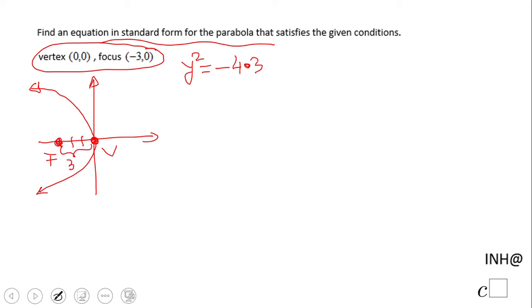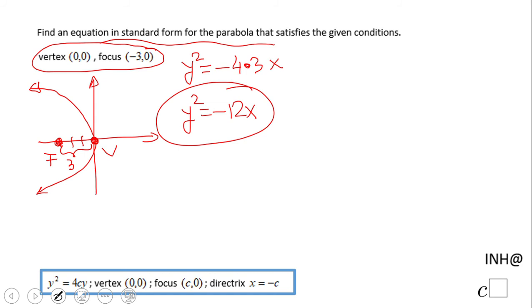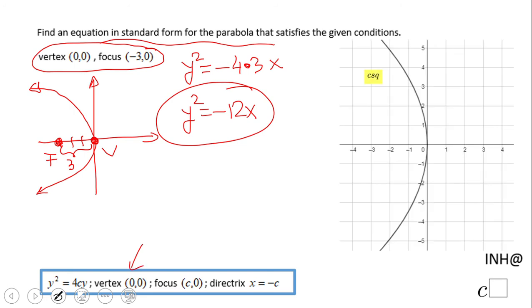The equation is y squared equals negative twelve x. You can see that also here with this equation. That negative is because simply it's open to the left - you see the real picture right here on the right.